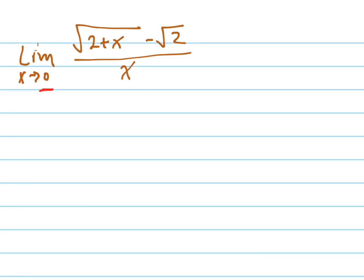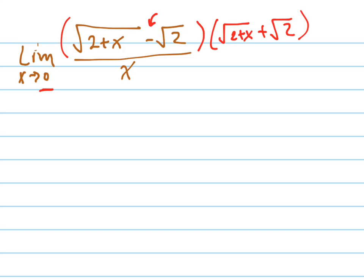So I have to do a little algebraic manipulation. The trick here is to multiply the top and bottom by the complex conjugate — the conjugate of the top — which is just changing this symbol right here. If it was a minus, make it a plus. If it was a plus, make it a minus.